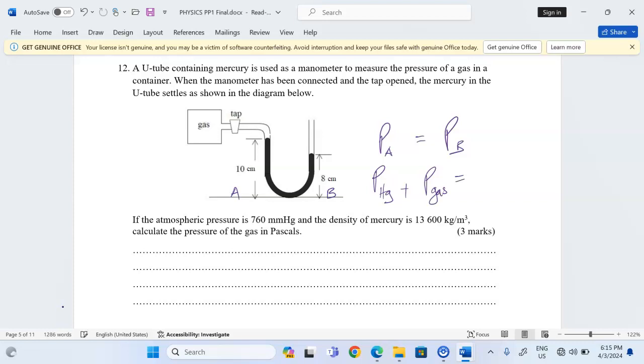while the pressure at B is equal to pressure due to the mercury height on side B plus pressure due to the atmosphere.